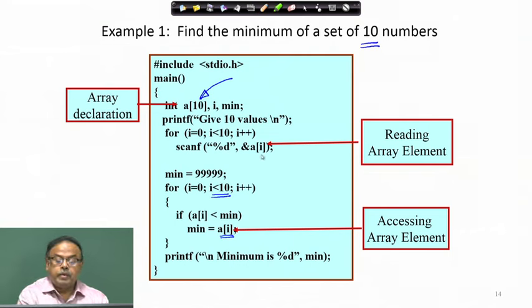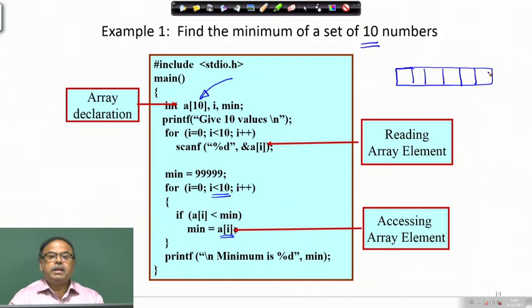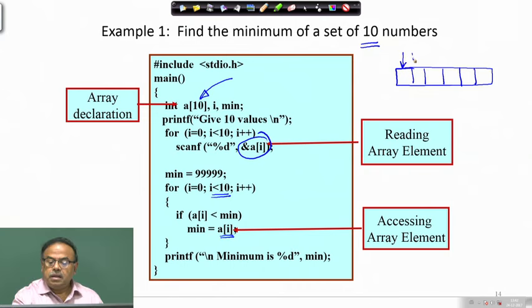It is very important to understand how we are reading the element. Since an array consists of a number of elements, I have to read them in a loop. At a time I cannot read the entire array in one shot, except for the case where I initialize it when I declare the array — giving int A with values within curly brackets. But if you have to do it at runtime, asking the user to enter values, you have to take one value at a time and store it in the array. That has to be done in a loop by varying the index one after another. As the index moves, I load the different locations with the values.